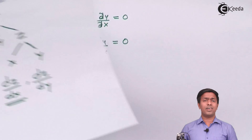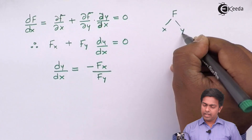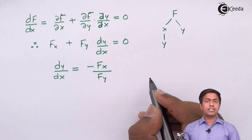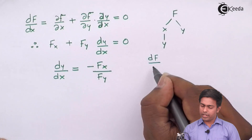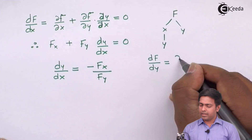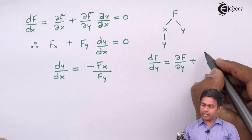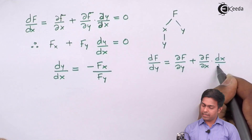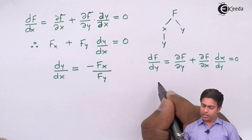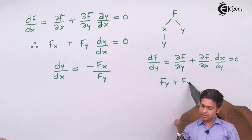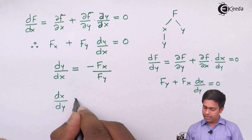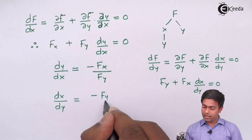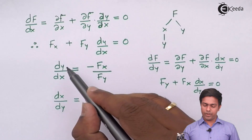Now consider another condition: F is a function of X and Y, and X is a function of Y. To find dF/dY, applying the chain rule gives: ∂F/∂Y + ∂F/∂X · (dx/dy) = 0, i.e., Fy + Fx·(dx/dy) = 0. Therefore dx/dy = −Fy/Fx. So we now have two formulas: dy/dx = −Fx/Fy and dx/dy = −Fy/Fx.